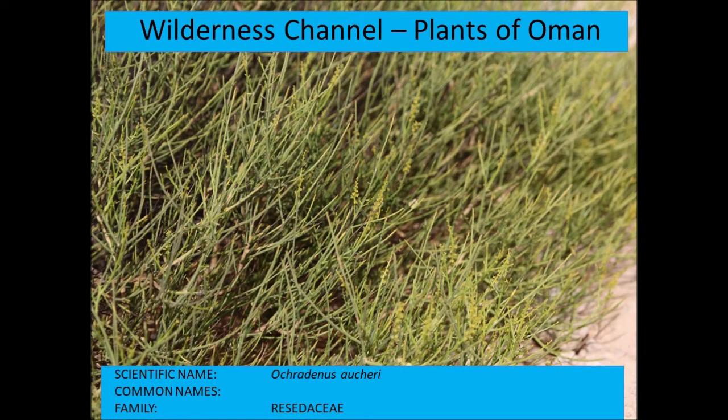Ochradenus or Kerria has these very delicate yellow flowers. It is found in many parts of Oman, there are several species, and it's a delightful little bush.